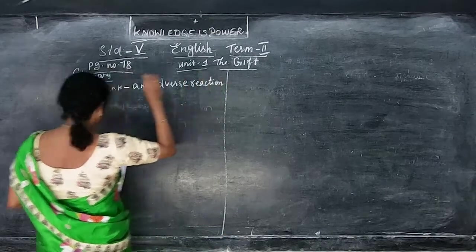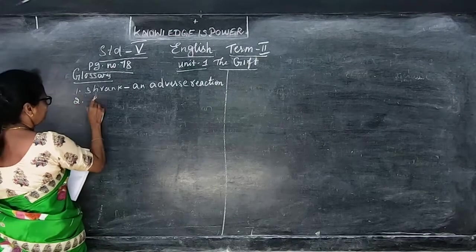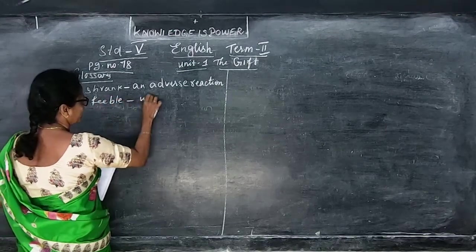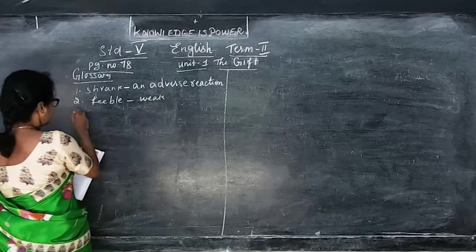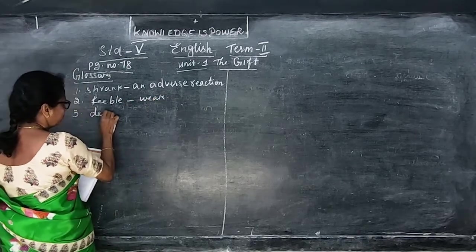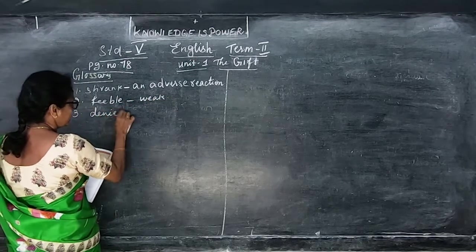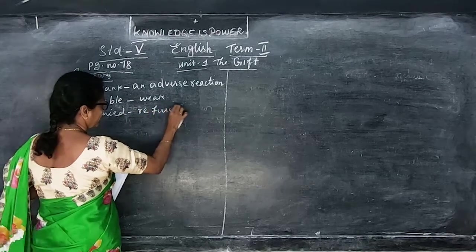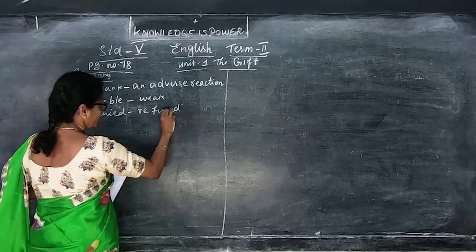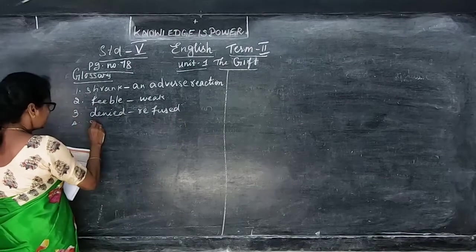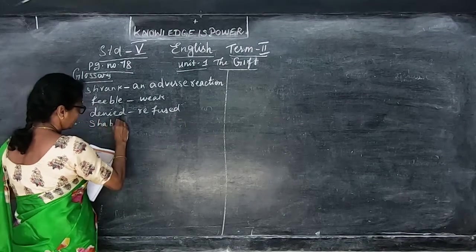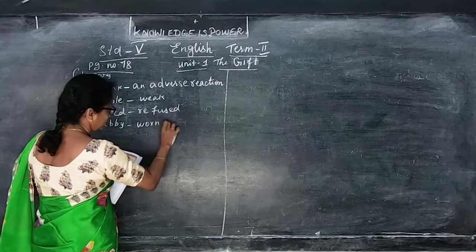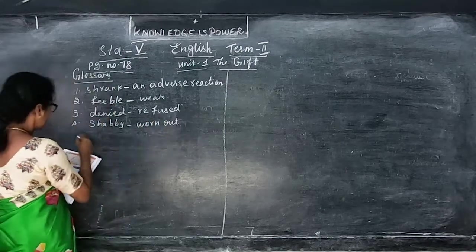The next one is 'feeble,' that is weak. Then 'denied' — refused. Then the fourth one, 'shabby' — worn out.